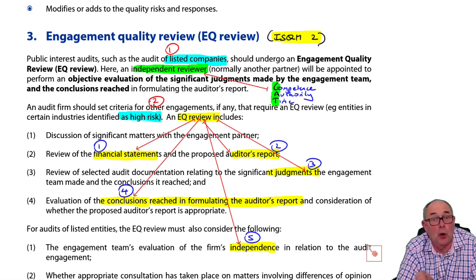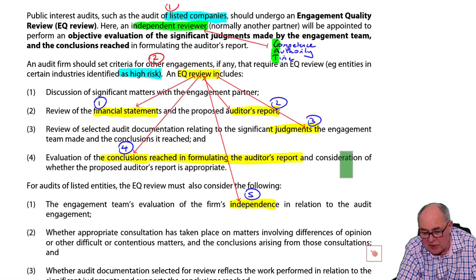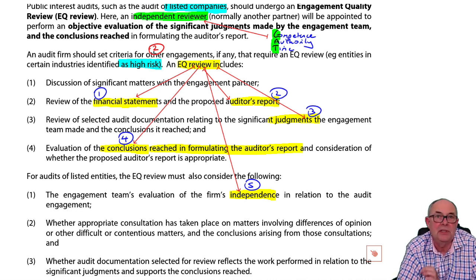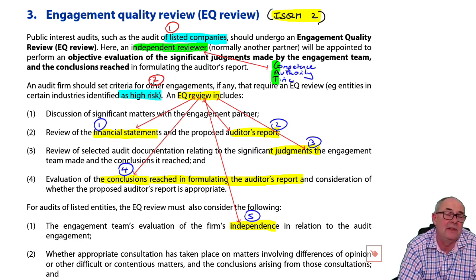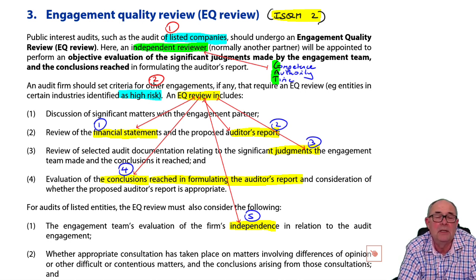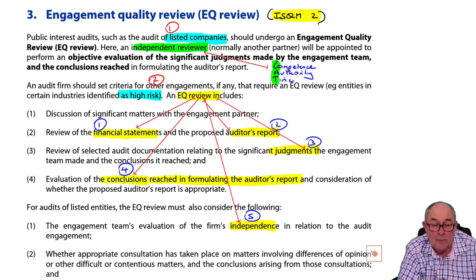We need to make sure the person doing the reviewing is independent and useful. Remember the mnemonic CAT: are they Competent? Do they have Authority? And above all, do they have Time? There's been some discussion in the financial press about second reviews being done in half an hour, so we need to make sure proper resources are allocated.